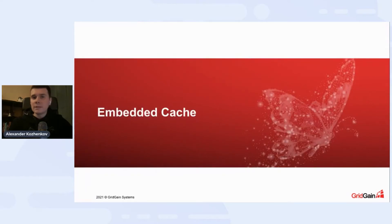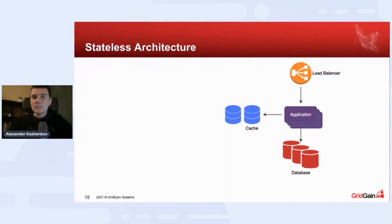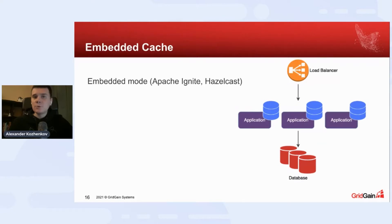So what can we do better? One option is to use embedded cache. Some cache data sources support embedded mode — for example, Apache Ignite and Hazelcast — and we can move the cache layer into the application layer. Nodes will connect to each other and unite into a cluster, so we will have sharding and replication out of the box, just as with external distributed cache.